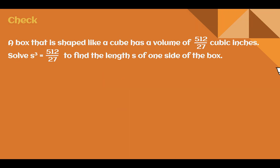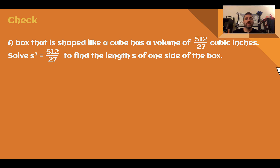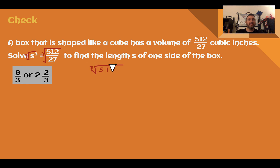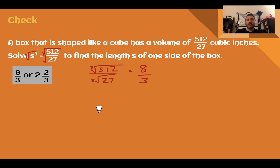Check your understanding: read through the situation and solve for the side of the box. Pause the video and complete the check. You should have said 8 thirds or 2 and 2 thirds. We take the cube root of both sides. The cube root of 512 is 8, and the cube root of 27 is 3, giving 8 thirds. As a mixed number, 3 goes into 8 twice with 2 left over: 2 and 2 thirds. As you go through these problems, it's helpful to memorize perfect squares and square roots up to about 20, and the 10 perfect cubes up to 1,000.